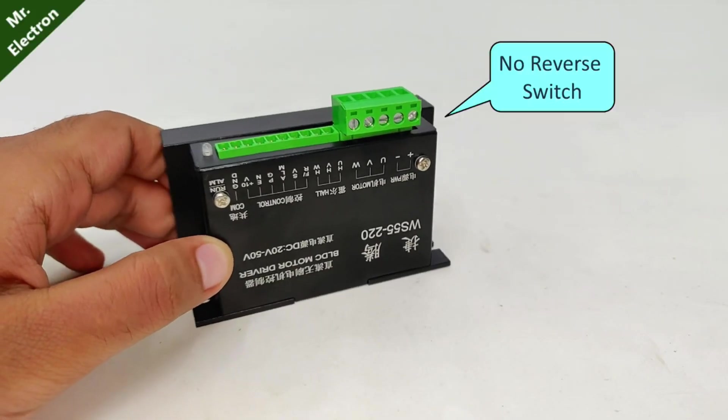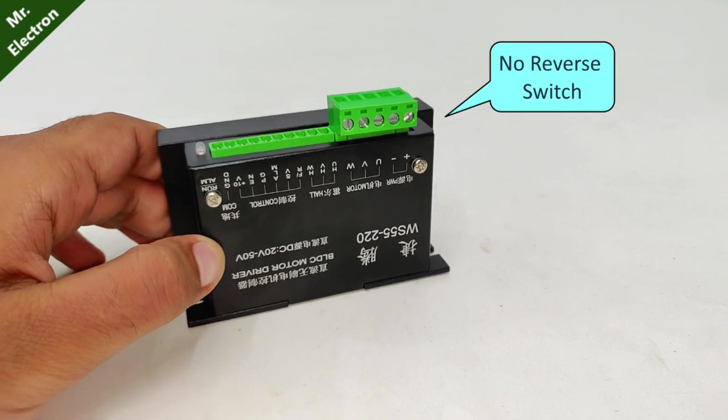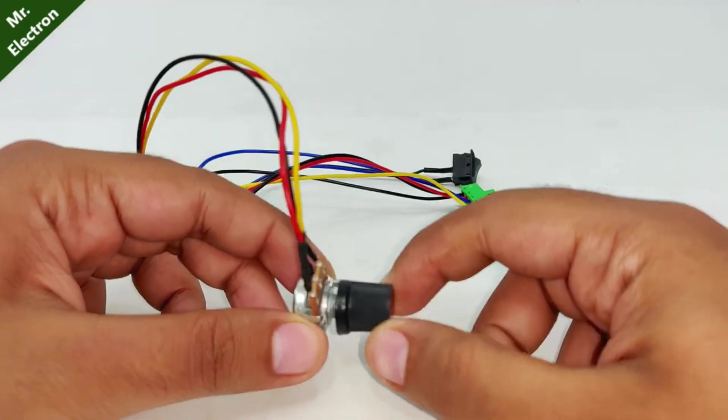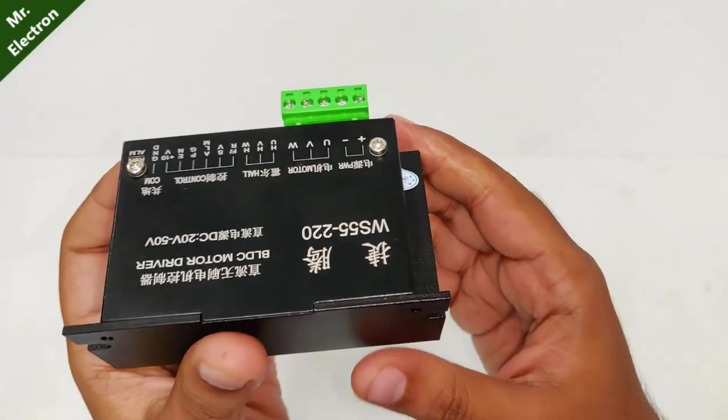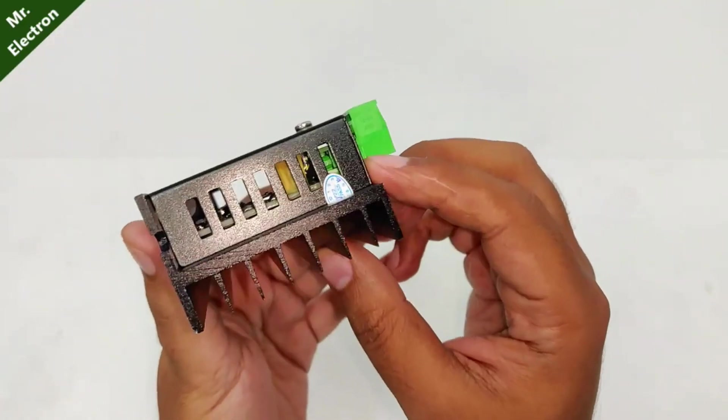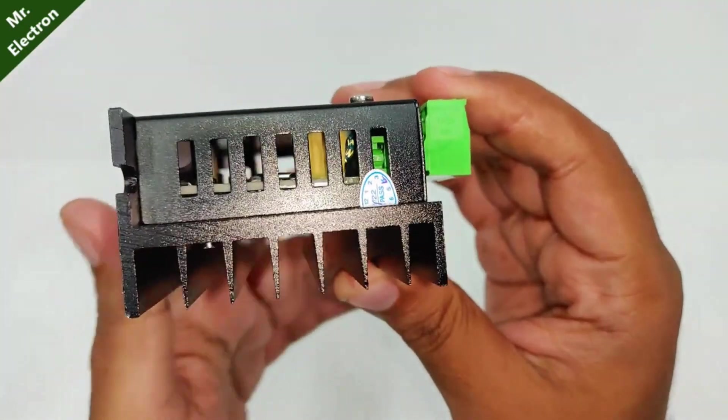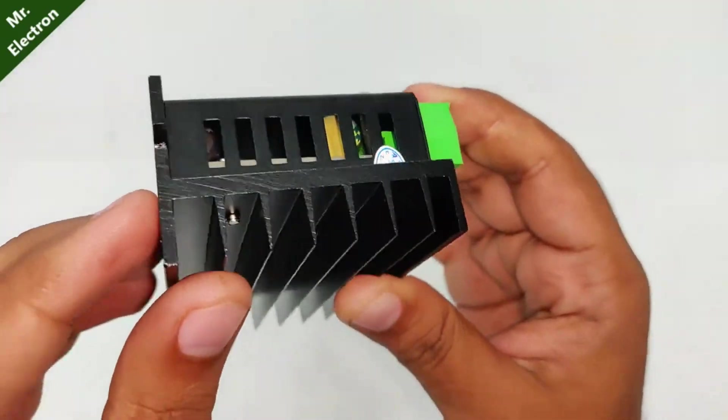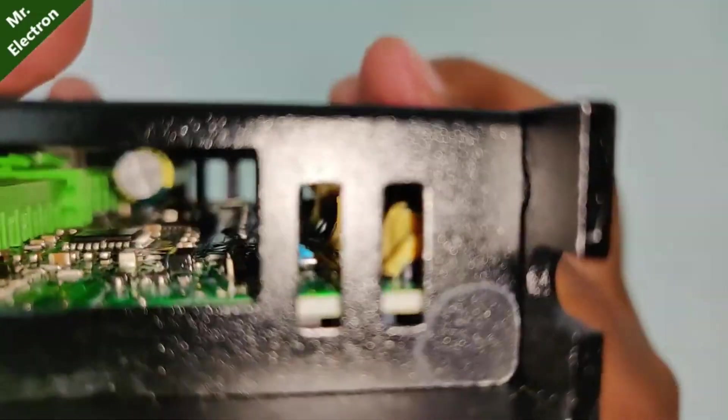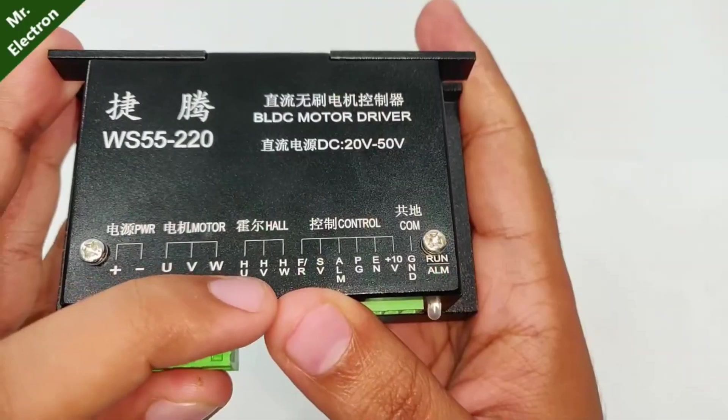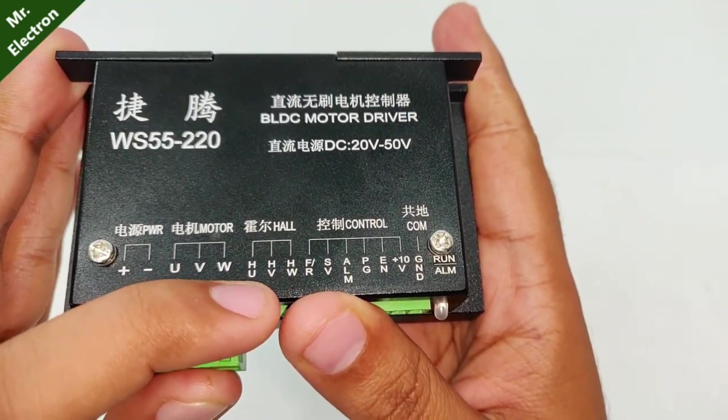Although this controller does not come with the reverse switch. You have to add it yourself. Now let's have a closer look at its build quality. You can see how thick the heat sink is that they have used. That's the inside view of the circuit and that's the provision for your hall type of motors.